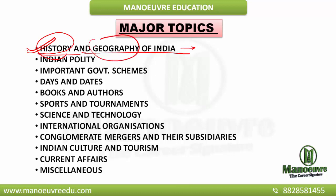When I say geography, it plays a very important role. You should know the location of the states, their capitals, the boundary of the Indian states when it comes to national boundaries and their international boundaries. Next, you need to study Indian polity. You need to have a good grasp of Indian polity as well.